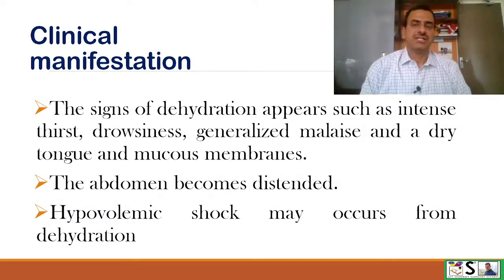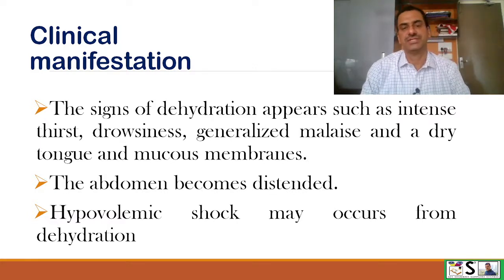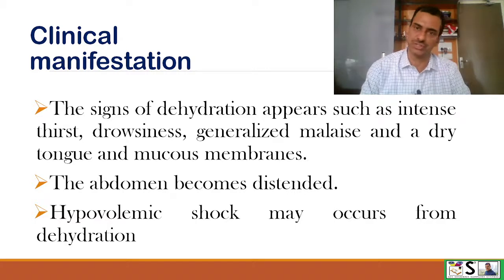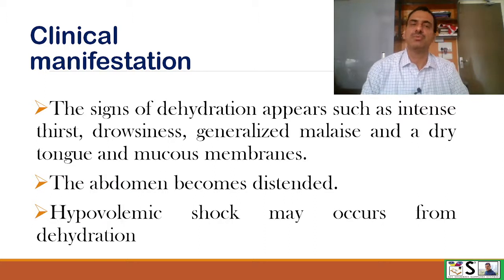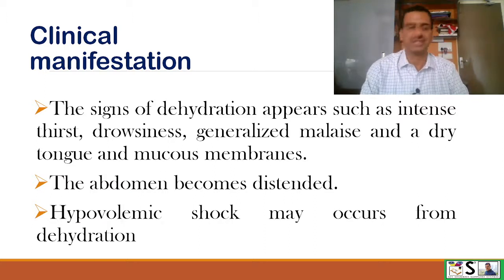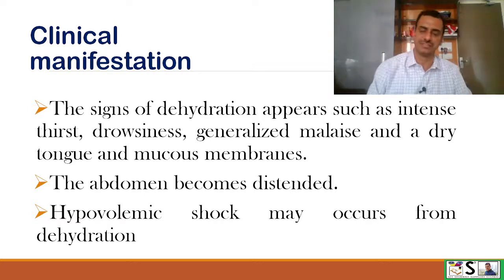Signs of dehydration also appear, such as intense thirst, drowsiness, generalized malaise, and a dry tongue and mucous membrane. The abdomen becomes distended. Hypovolemic shock may occur from dehydration because there is no proper absorption from the intestine.